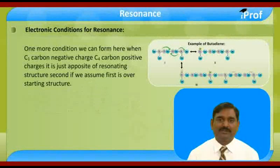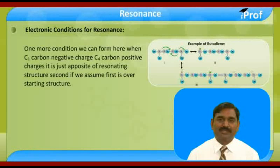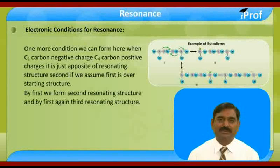One more resonating structure can be formed here — when C1 carbon has a negative charge and C4 carbon has a positive charge. This is just the opposite of resonating structure two. If we assume the first is our starting structure, from the first we form the second resonating structure, and from the first again we form the third.